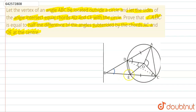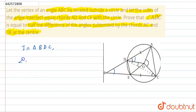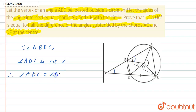Let us now consider triangle BDC — the triangle shown by the dotted line. In triangle BDC, angle ADC is an exterior angle. So we can say that angle ADC equals the sum of the two interior opposite angles of the triangle, that is, angle DBC plus angle DCB equals angle ADC.